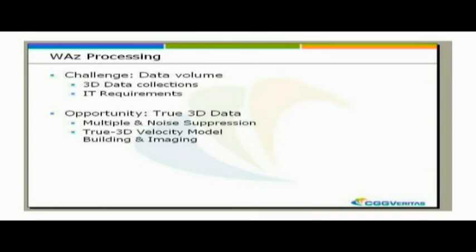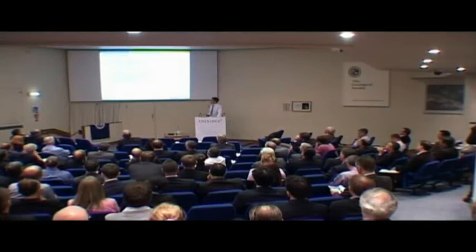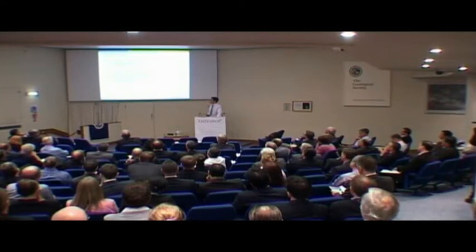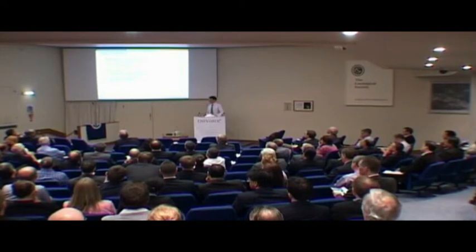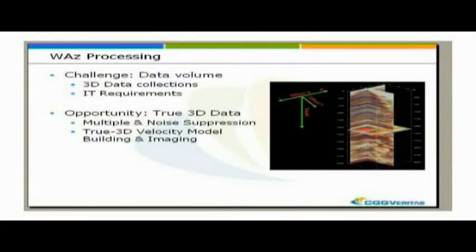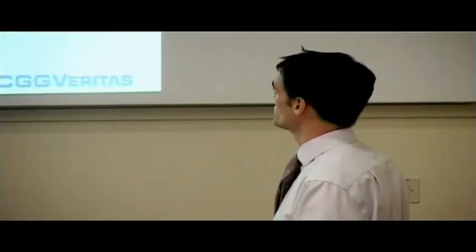We have these true 3D data collections which allow us to use true 3D algorithms, improve multiple noise suppression, and improve our velocity model building and imaging. One of these wide azimuth gathers is a common image gather. Instead of just being a 2D thing as seen with 3D narrow azimuth seismic, this wide azimuth gather is a 3D image gather with offsets in the X and Y direction.